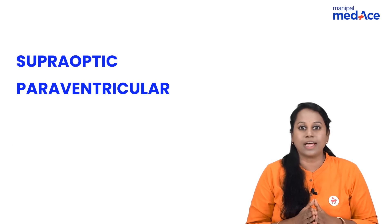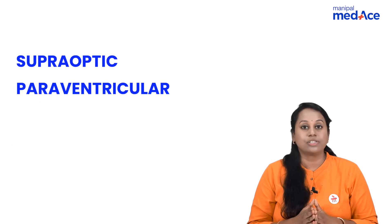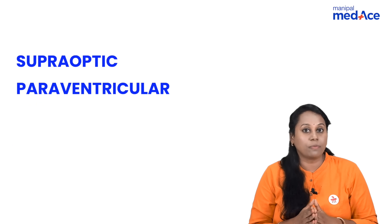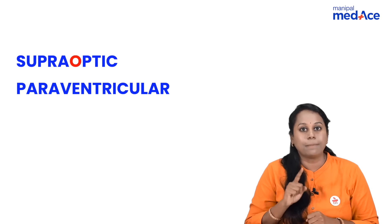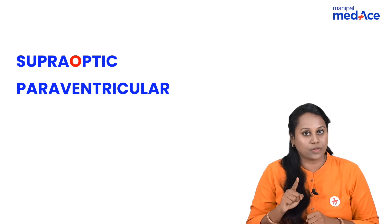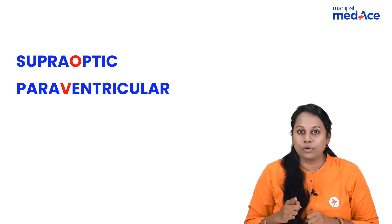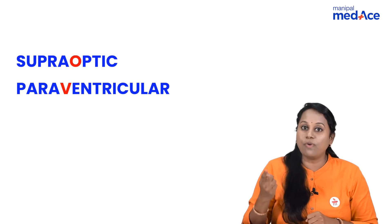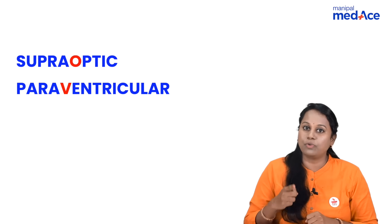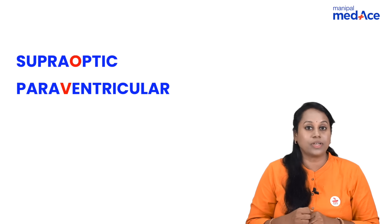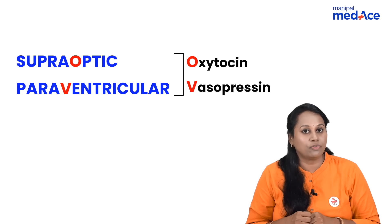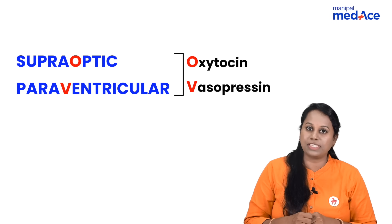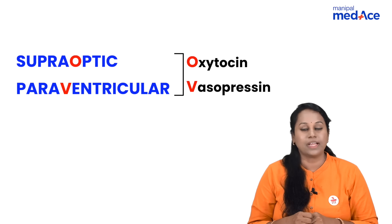Supraoptic and paraventricular nucleus. Supraoptic has an 'O', and paraventricular has a 'V'. So they produce the O and V hormones of the posterior pituitary — O for oxytocin, V for vasopressin. And that was an easy learning of the functions of hypothalamus.